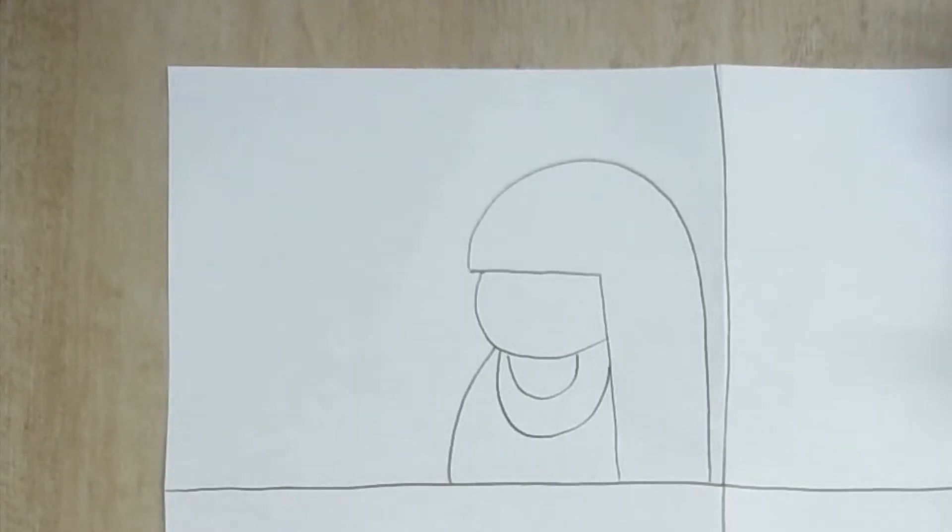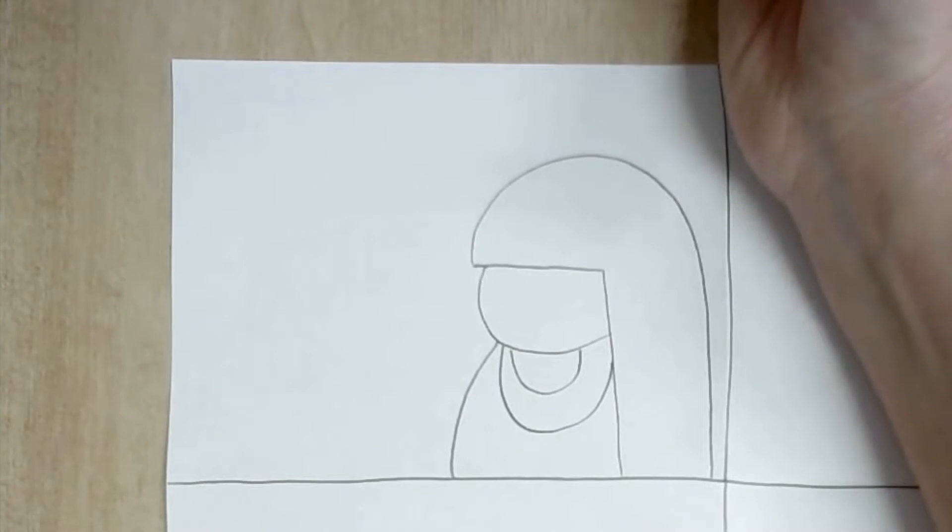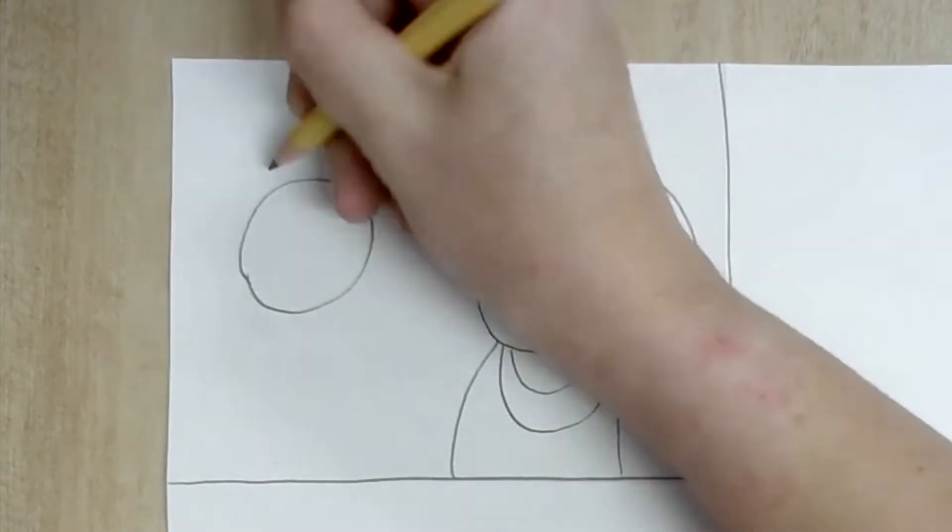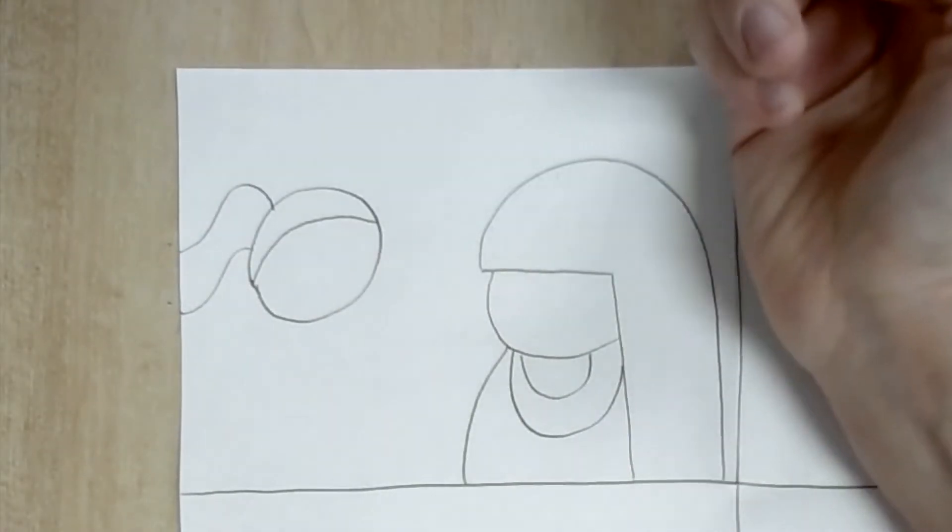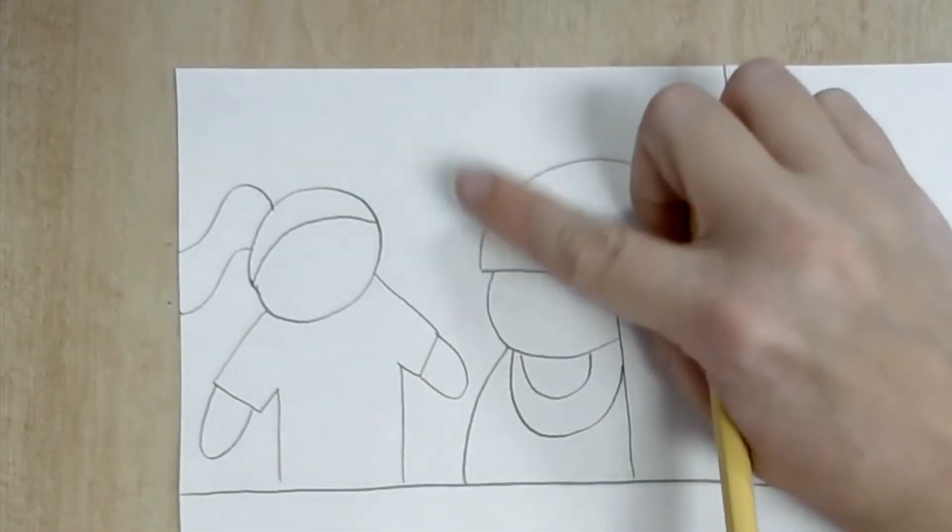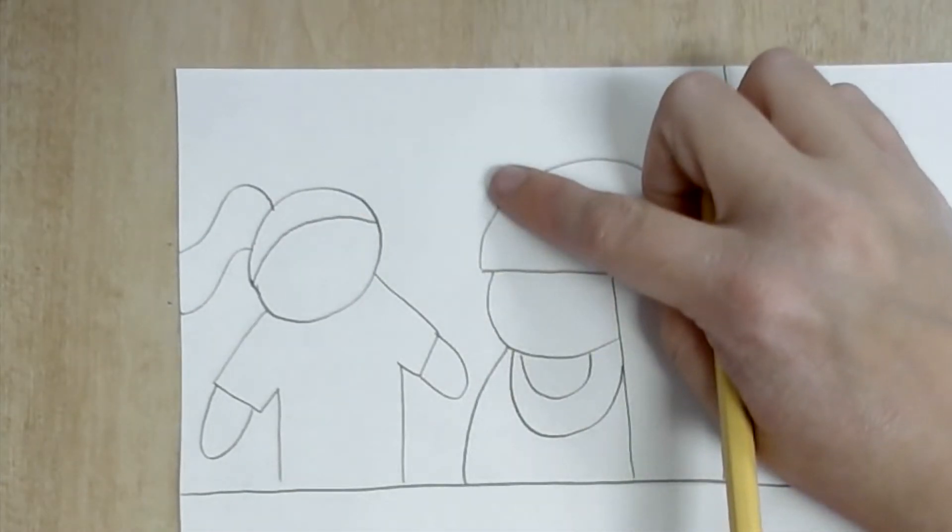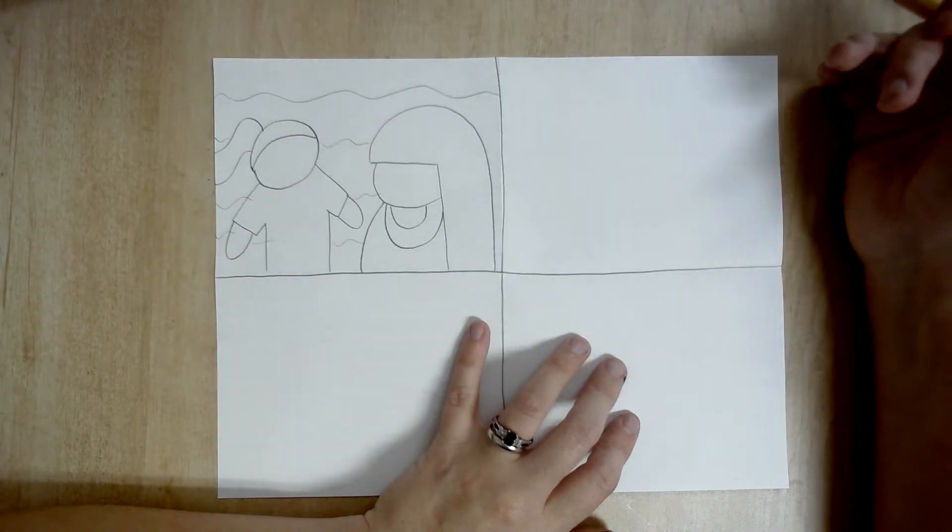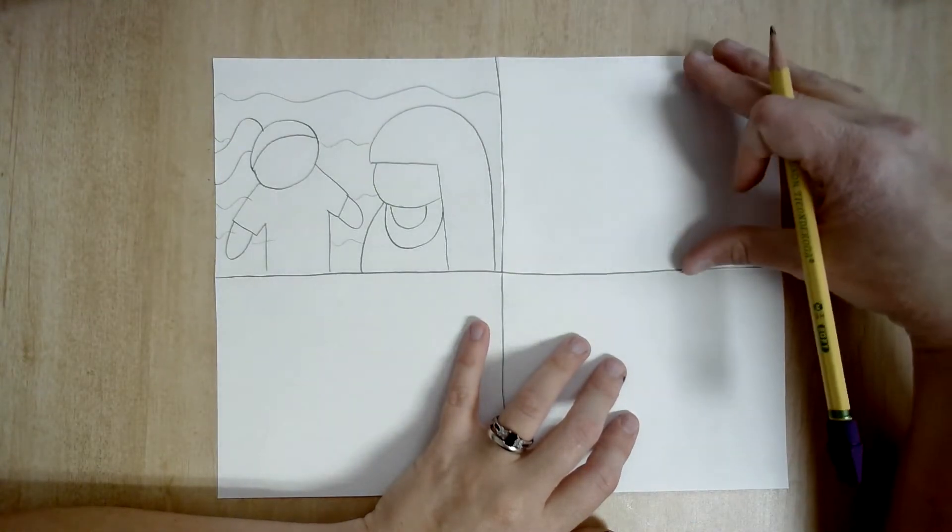And now I'm going to draw my friends. My best friend always wears a big ponytail. She always wears t-shirts. I need to think about something for my background. And remember these are thumbnail sketches. They do not have to be super detailed yet at this point.